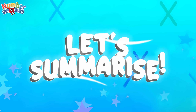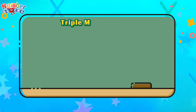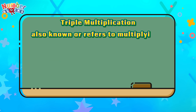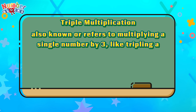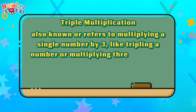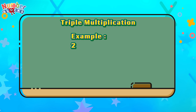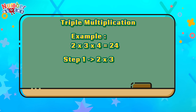Let's summarize. Triple multiplication, also known as multiplying three numbers together — like tripling a number. Example: 2 times 3 times 4 is equals to 24. First step, let's multiply the first two numbers: 2 times 3 is equals to 6, wherein 6 is the product.